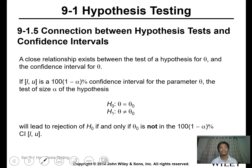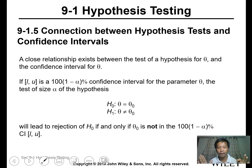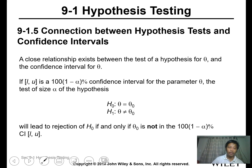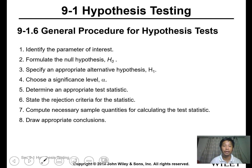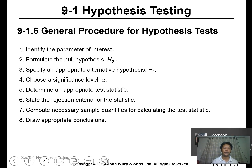Connecting hypothesis testing and confidence intervals: the confidence interval dictates the 95% or 99% — or 1 minus alpha — range within which the sample parameter is determined. In hypothesis testing, we are usually interested in values outside that range, beyond the 1 minus alpha boundary.